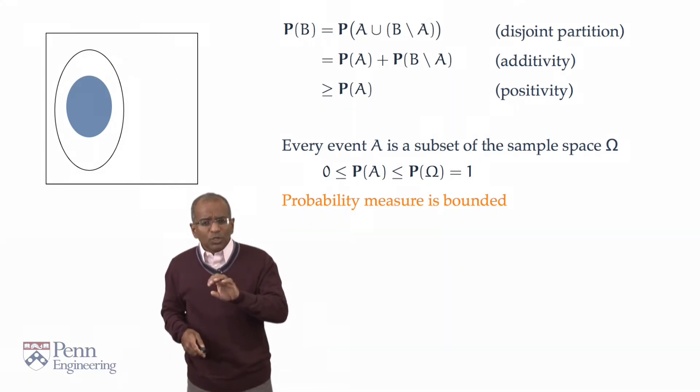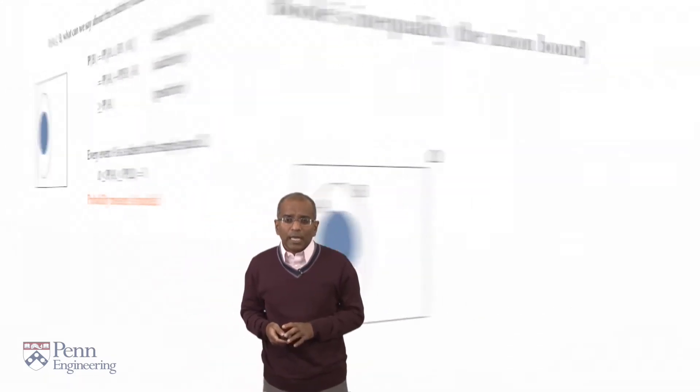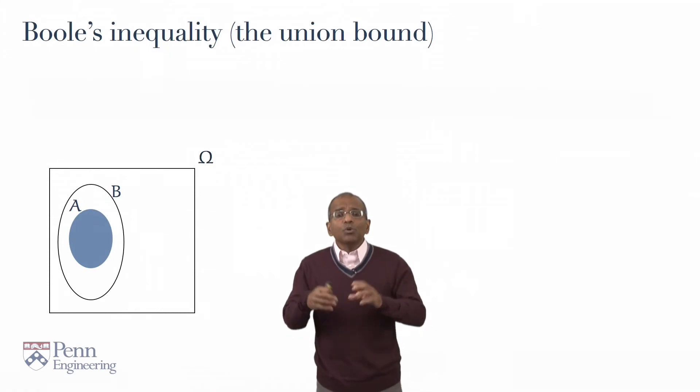Now, monotonicity looks really trite, I admit. But it has deep and subtle consequences. We will see some as we go along. But let me start by showing you one identity we can churn out using monotonicity. This is called Boole's inequality, or also called the union bound.